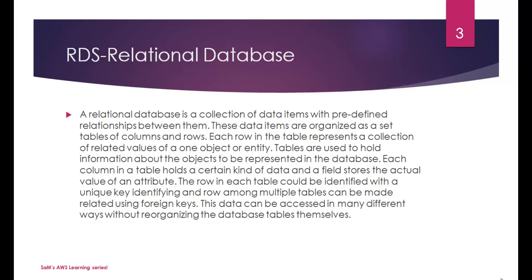Tables are used to hold information about objects in a database. Each column holds a certain kind of data, and a field stores the actual value of an attribute. Rows can be identified with a unique key, and relationships between tables can be made using foreign keys. This data can be accessed in many different ways without reorganizing the database tables themselves.